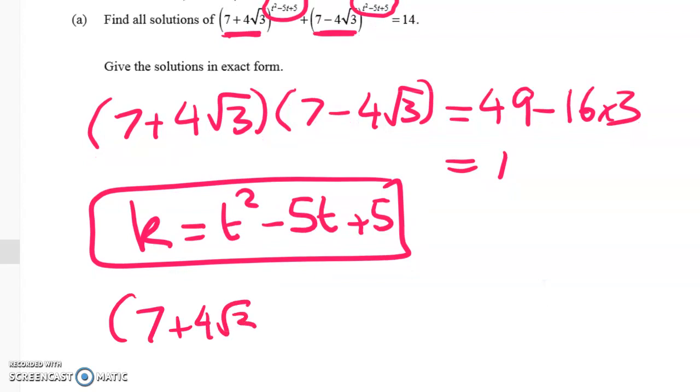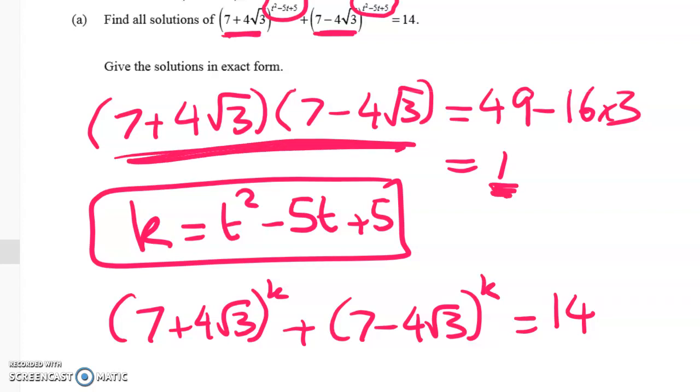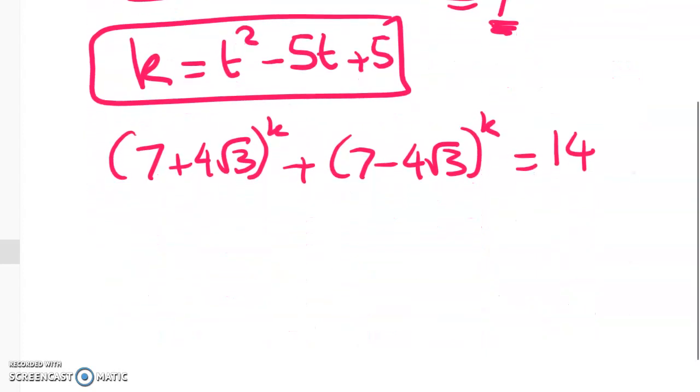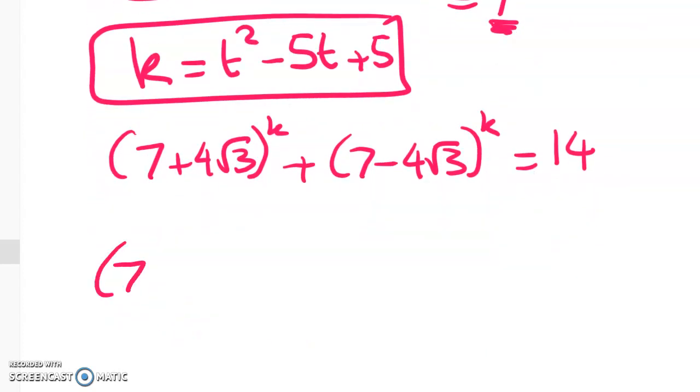So call it something and now I've got this. I've got 7 plus 4 root 3 to the power of k plus 7 minus 4 root 3 to the power of k equals 14. So I haven't got much further but I haven't really used this fact here yet. So let's see what we can say here. Well we've figured out that 7 plus 4 root 3 times 7 minus 4 root 3 is equal to 1.